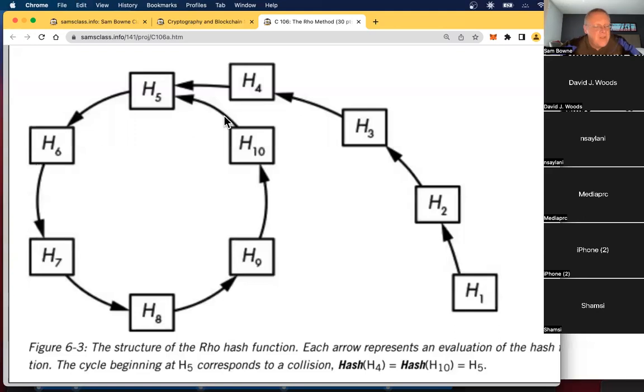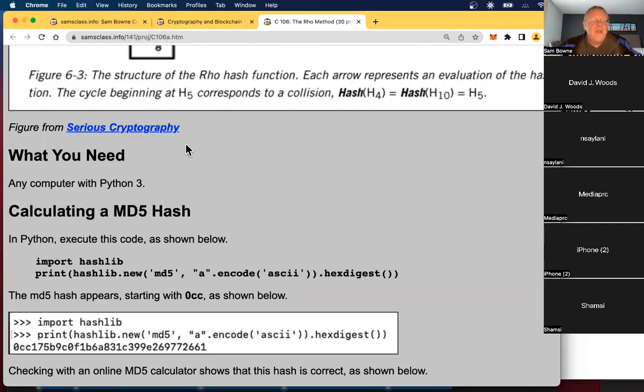And this is a way to find hash collisions and to rate how good a hash function is. One of the properties you want of a hash function is that it will have very few collisions. And in principle, if you have a good hash function, you should make it to the square root of the total number of hash values before you hit this loop approximately. This tail should be about the square root of n long and the loop should be about the square root of n long, where n is the total number of possible hash values.